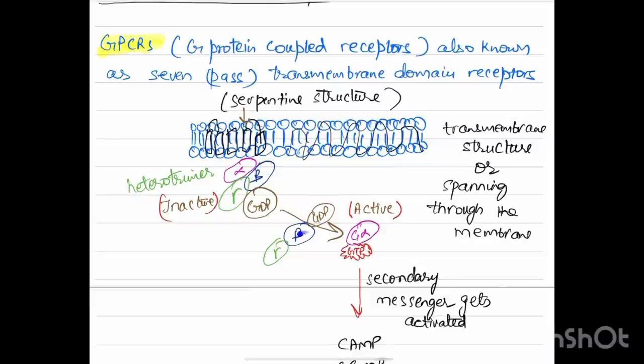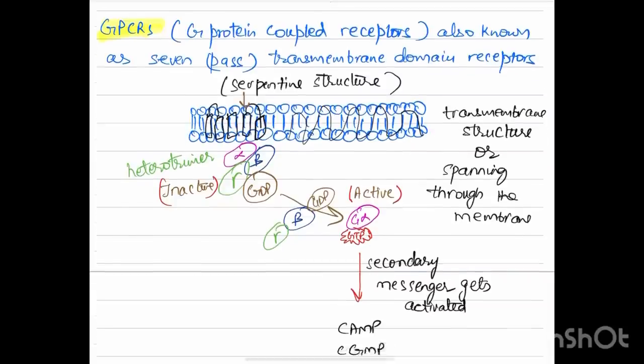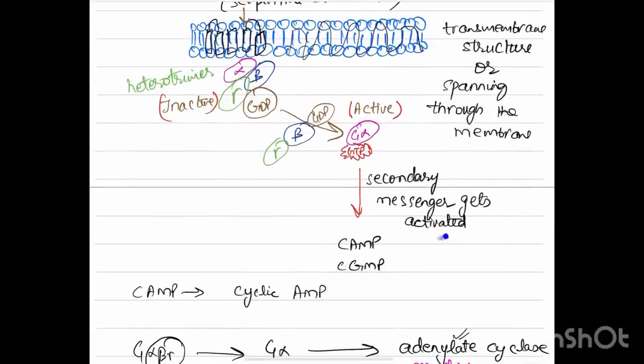It is a heterotrimer. In its inactive form, it has three subunits: alpha, beta, and gamma, which are bound to GDP. In order to become active, the beta and gamma subunits go away and only G-alpha is left with GTP. Once it gets activated, the secondary messengers cyclic AMP and cyclic GMP also get activated.